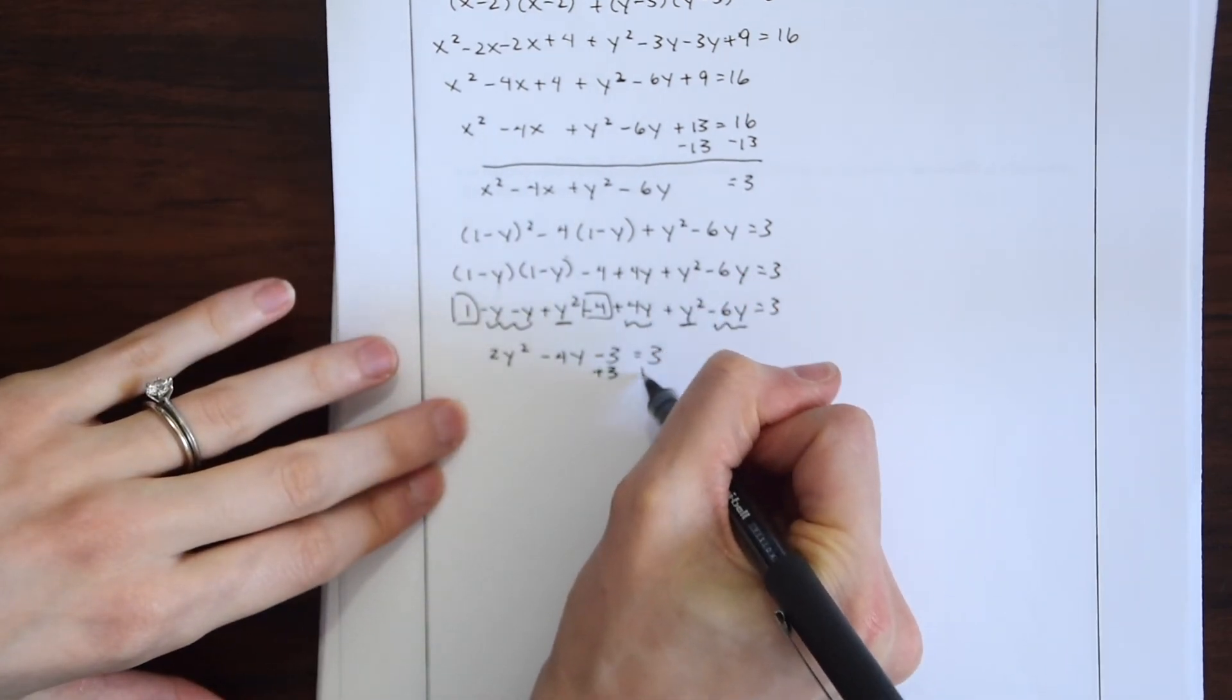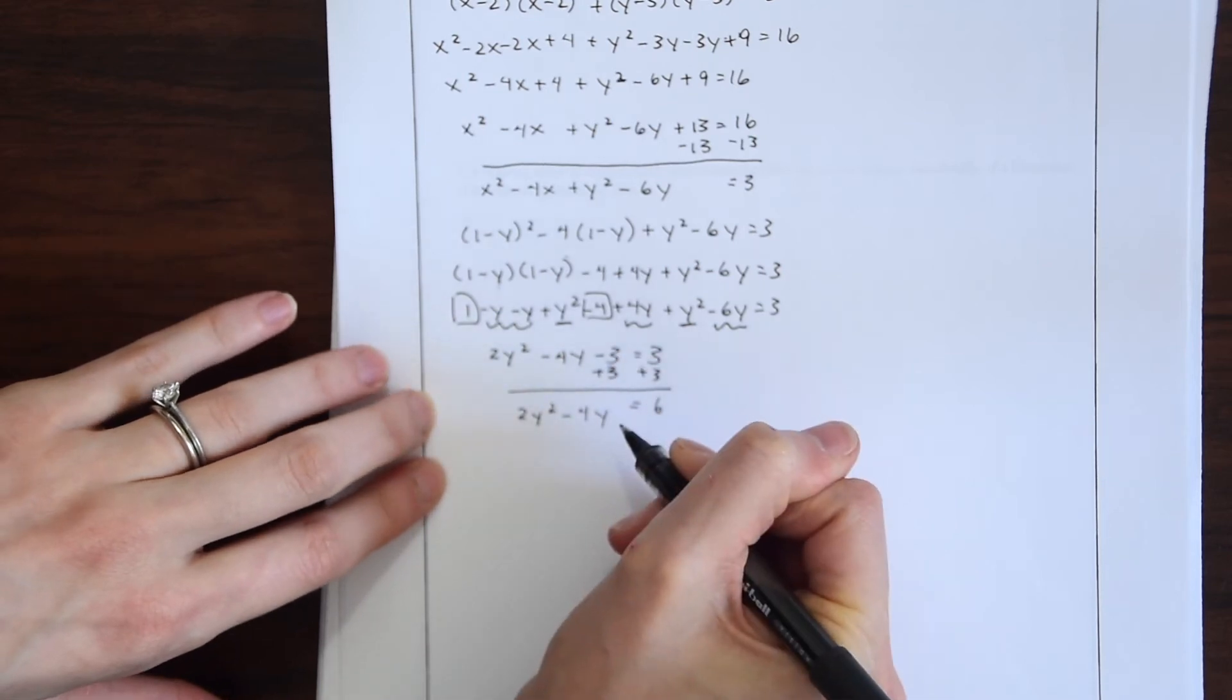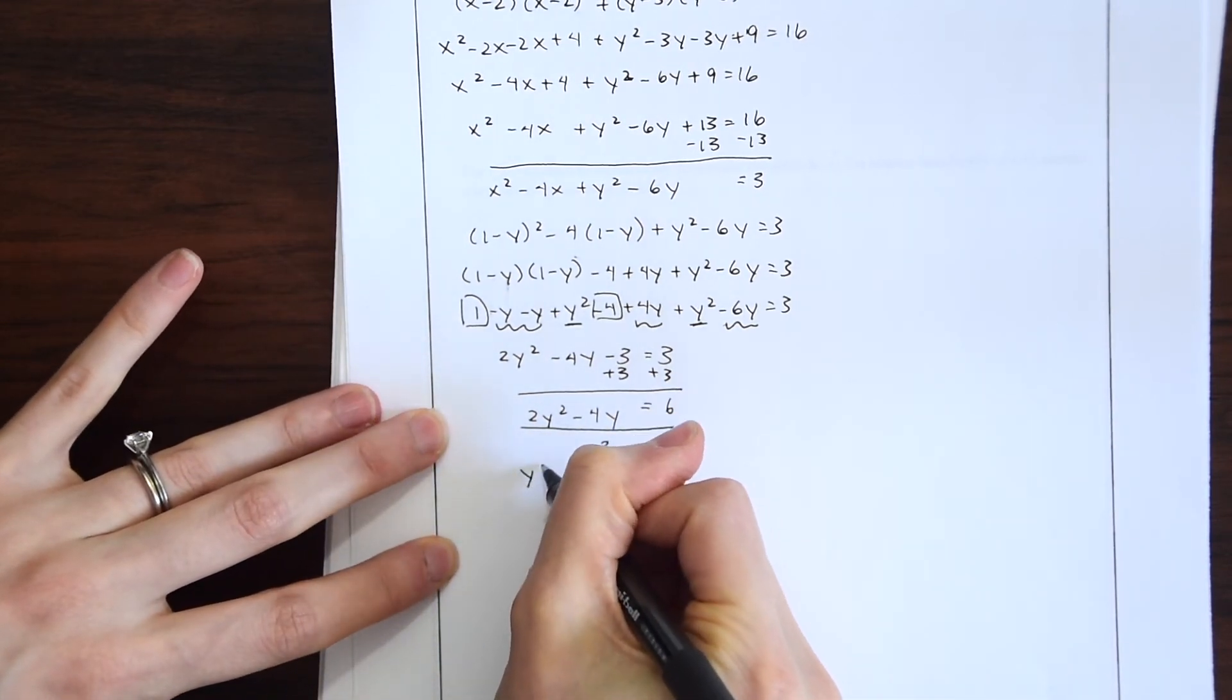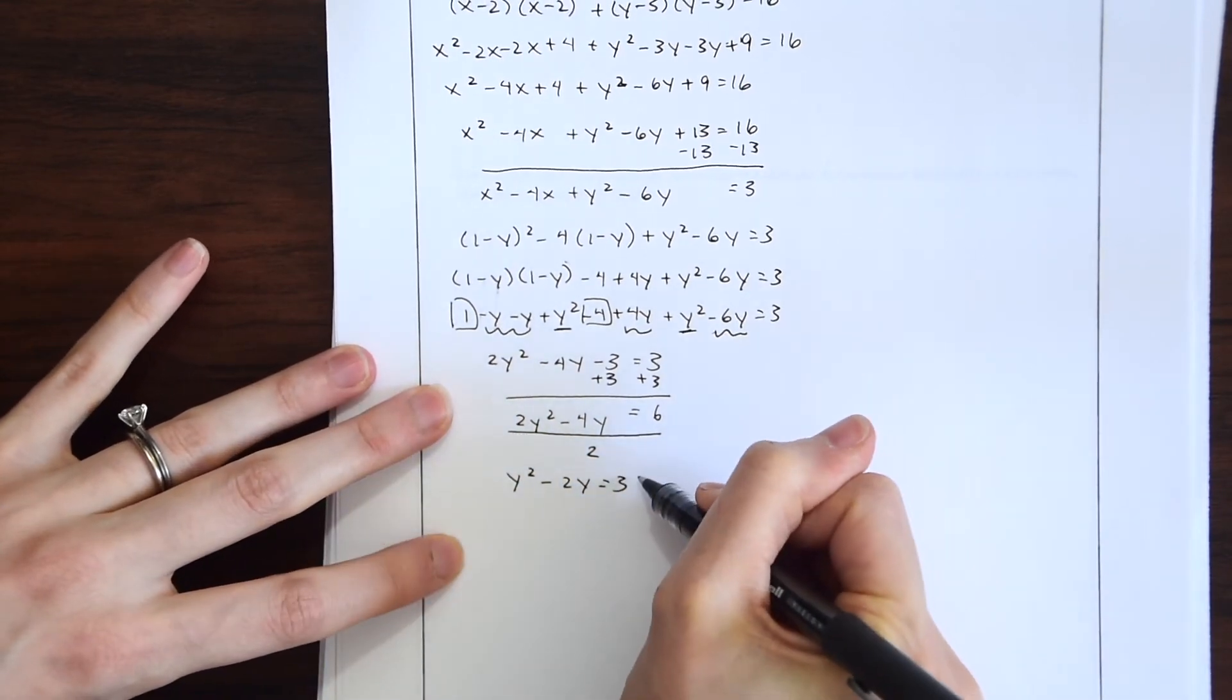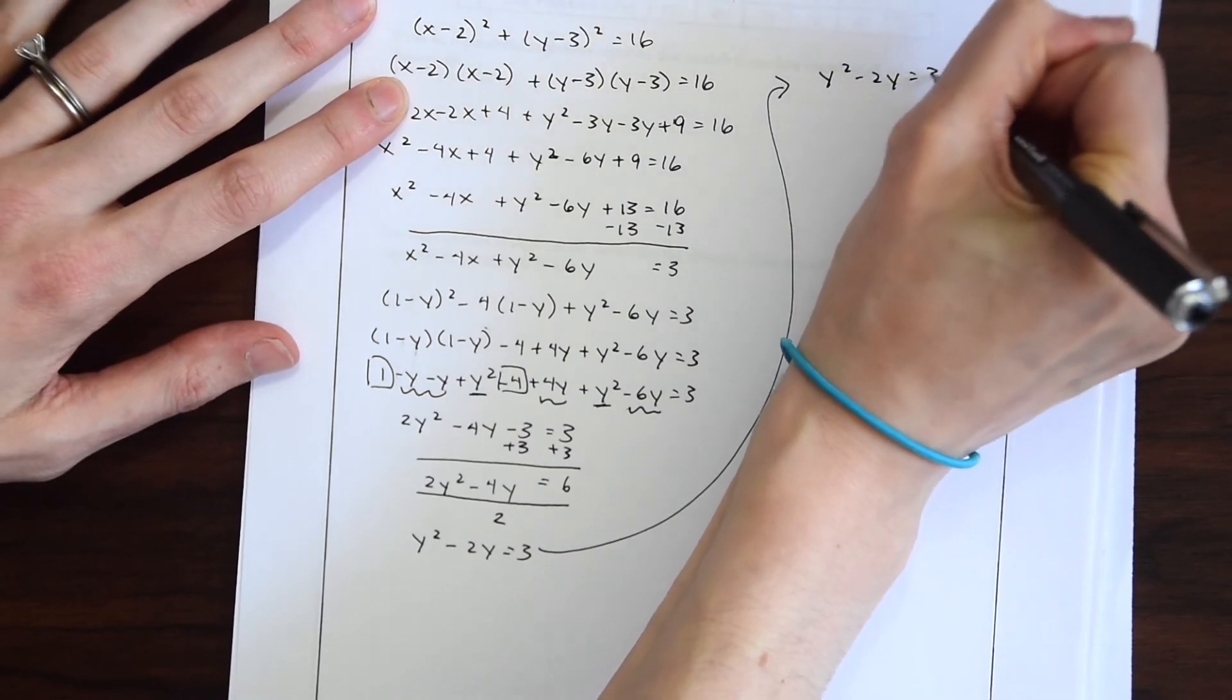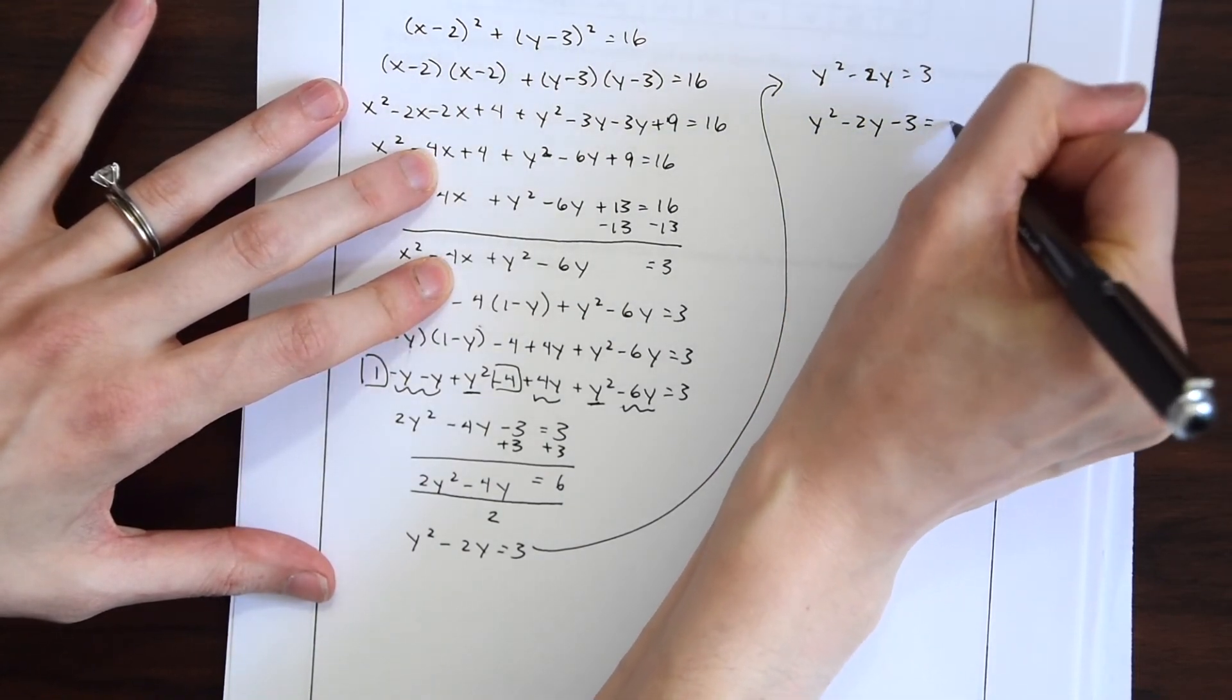So up next we want to add 3 to both sides. This will give us 6 equal to 2y squared minus 4y. From here notice that we can take a GCF from this and divide everything by 2. And when we do that we're going to get y squared minus 2y equals 3. So I'm going to bring this up over here because we're running out of room. So now we have y squared minus 2y equals 3. And notice this is a quadratic equation. So let's set this equal to 0. Move the 3 back over. Y squared minus 2y minus 3 equals 0.